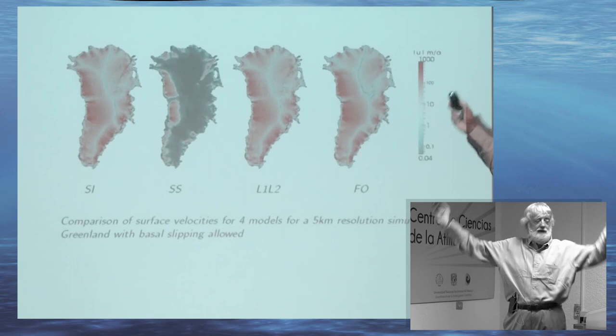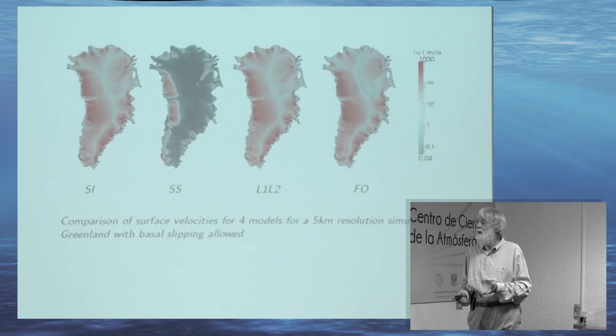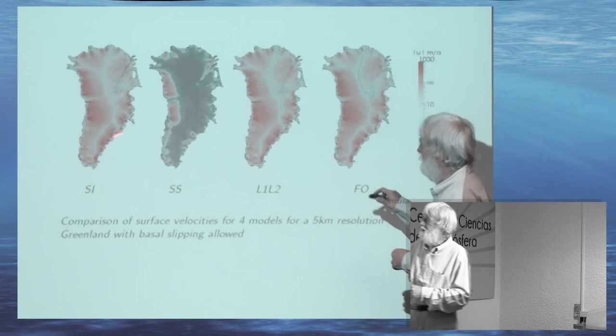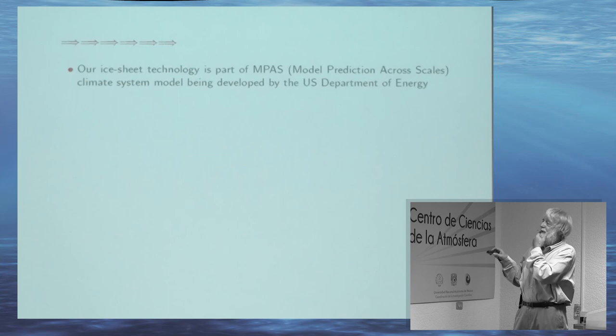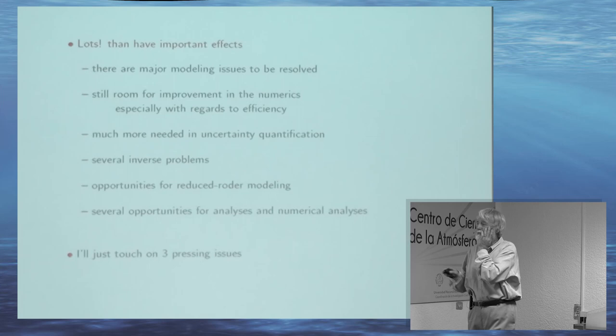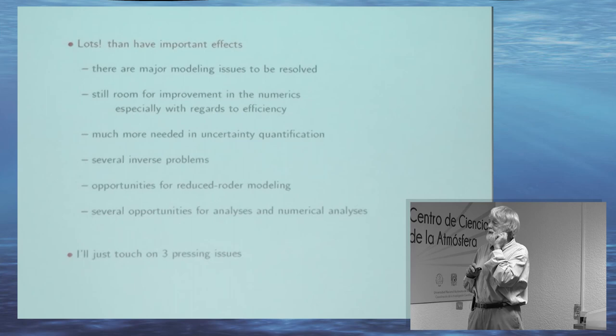You see these calving events — huge regions the size of a US state going into the water. Those are inconsequential because they're already floating, so Archimedes tells us they're not going to cause sea level rise. Most of the loss of Greenland and Antarctica is due to ice rivers going into the ocean. Here's the same comparison for Antarctica. Our ice sheet technology is part of the MPAS system. There's a huge amount of work still to do — modeling issues, numerics especially with respect to efficiency, uncertainty quantification, inverse problems, and opportunities for reduced order modeling and numerical analysis.